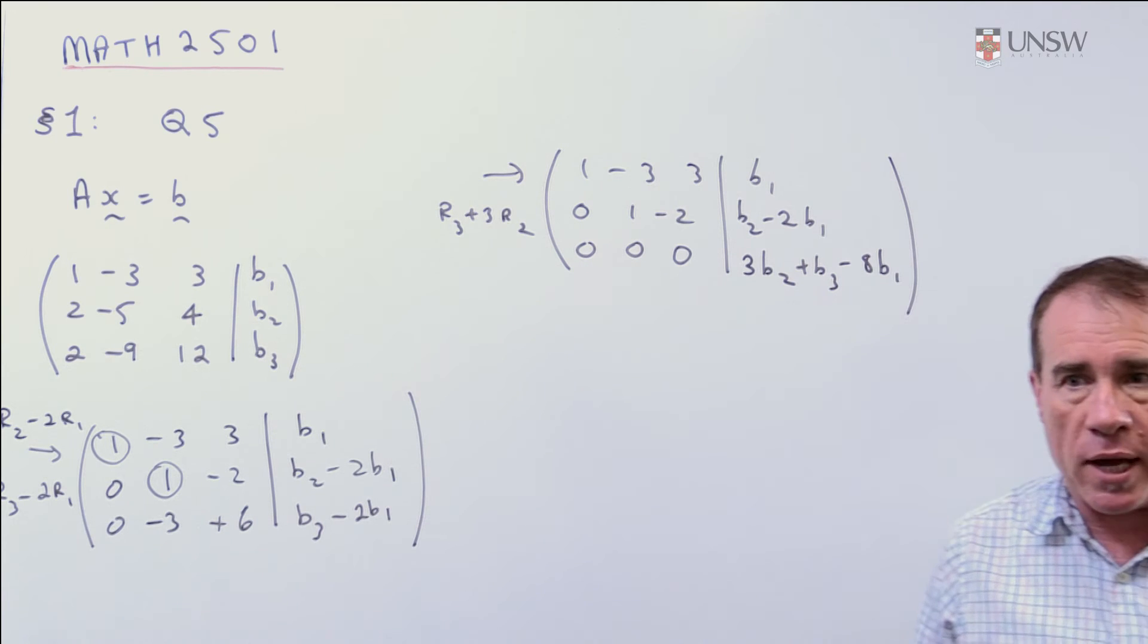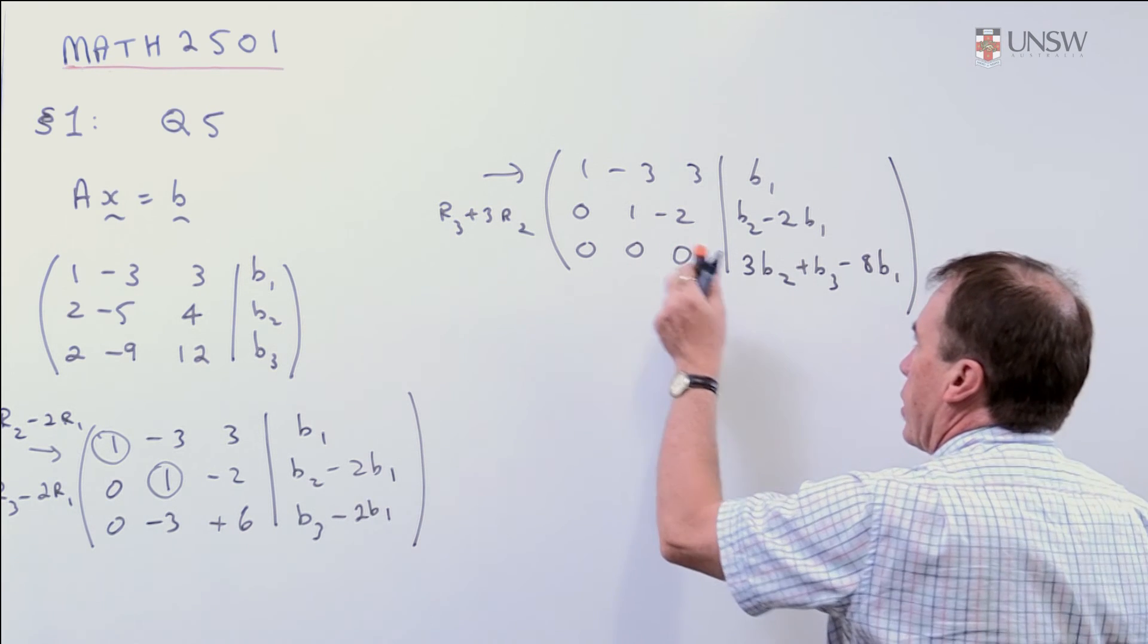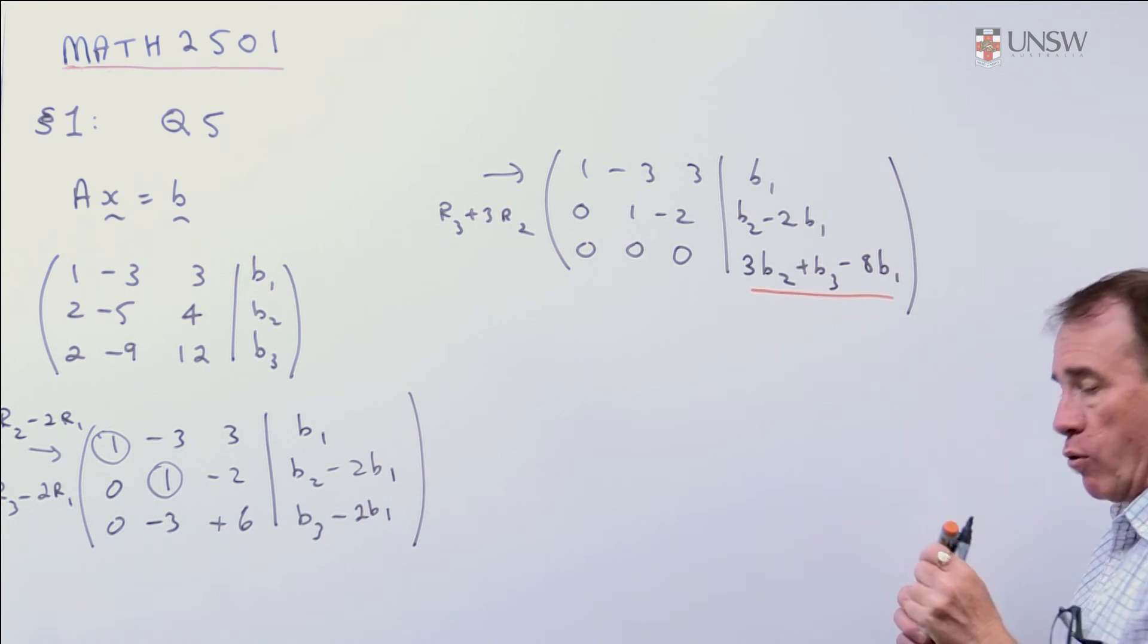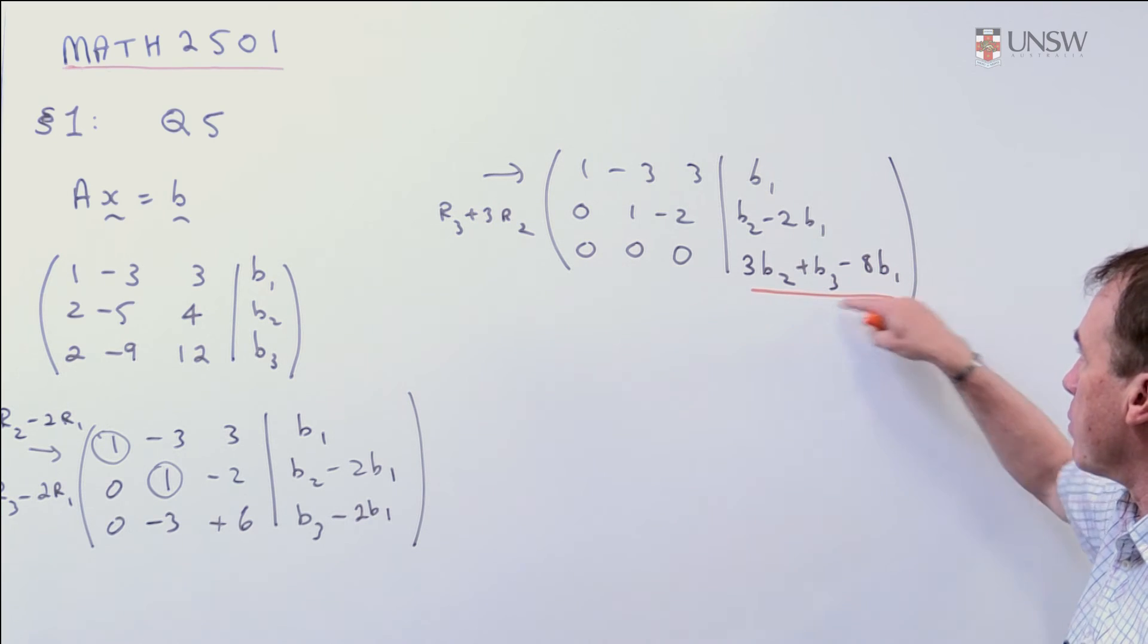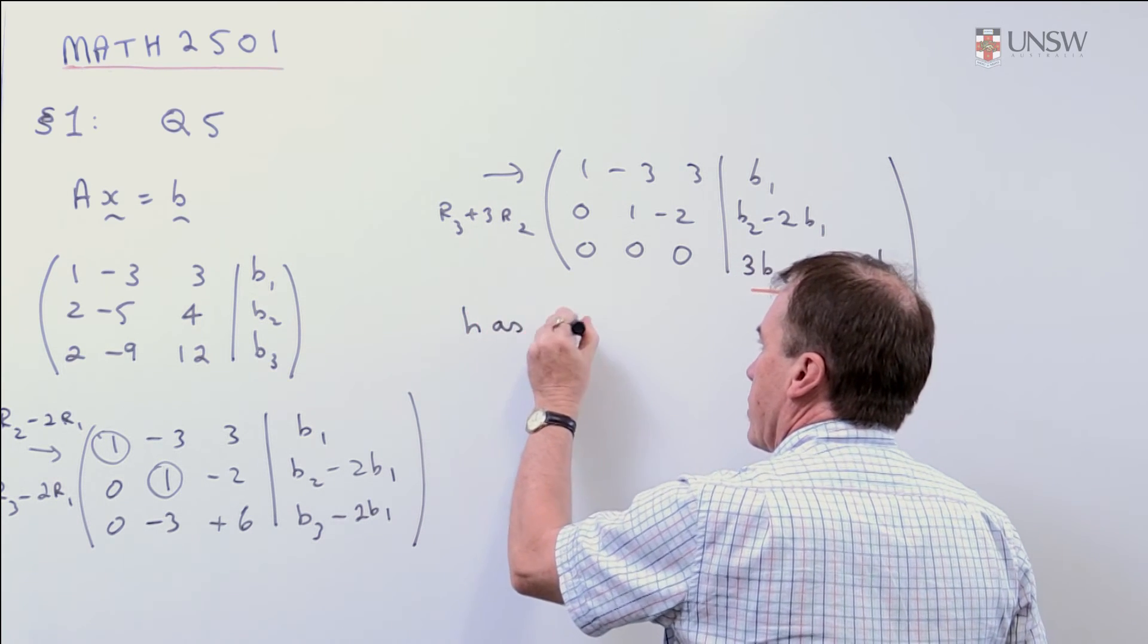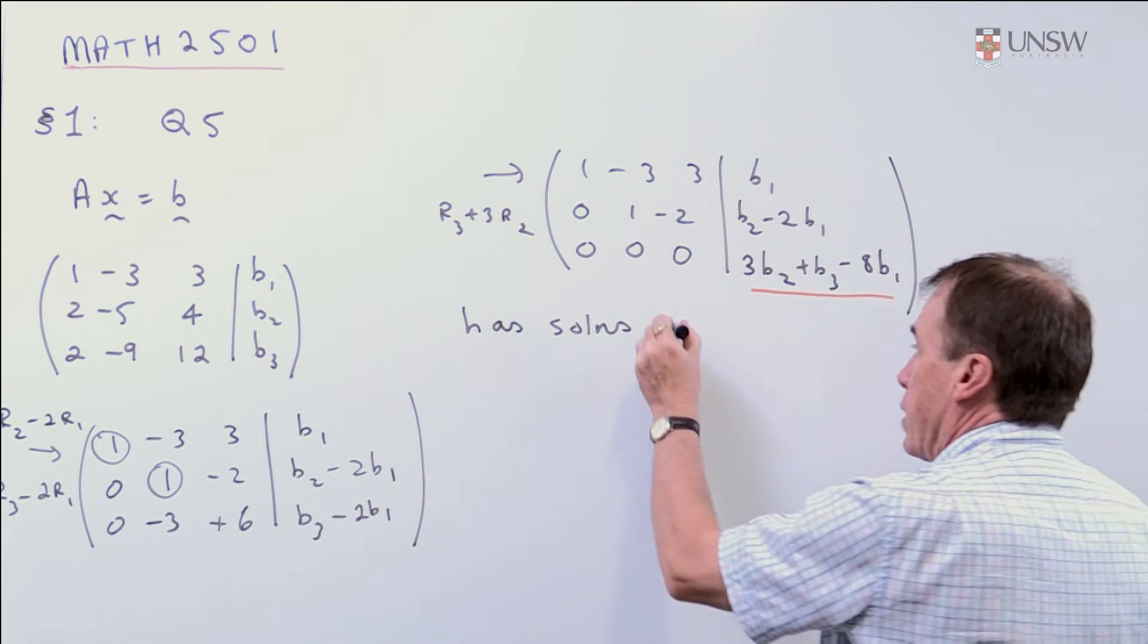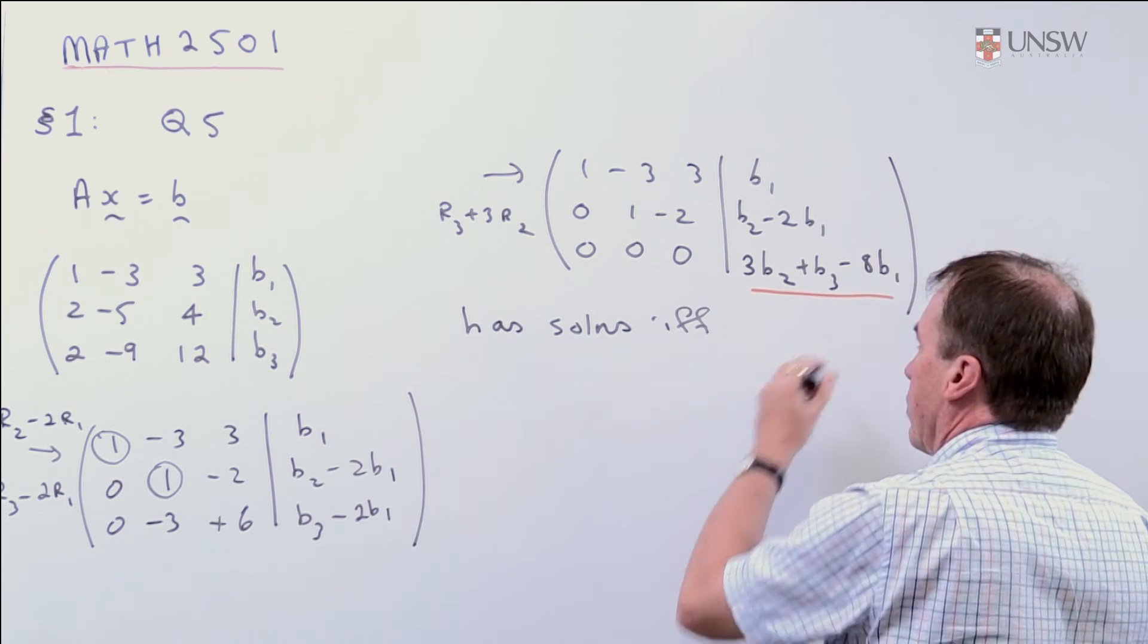Now, in order for that to have solutions, then the bottom row tells me that 0 equals this number, and in order for that to make sense, then this number over here must be 0. So, we finish the problem by saying this has solutions. In fact, it's got infinitely many solutions, if and only if this number here is 0.